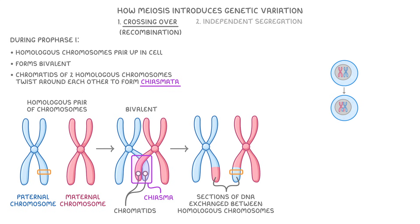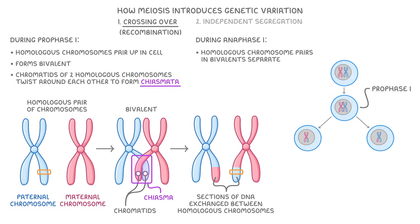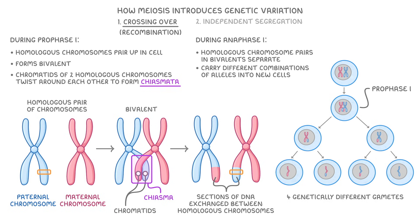After exchanging genetic material during prophase one, variation is also introduced during anaphase one, where the homologous chromosome pairs in the bivalent separate, and they carry different combinations of alleles into the new cells that they'll eventually form. Taken together, these processes mean that by the end of meiosis we have four genetically different gametes. Remember, this actually happens to 23 pairs of chromosomes instead of just the one pair shown here, and this adds a lot of genetic diversity to the offspring that can be produced.